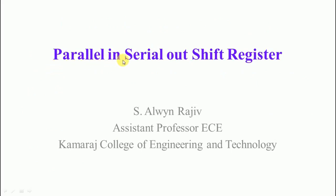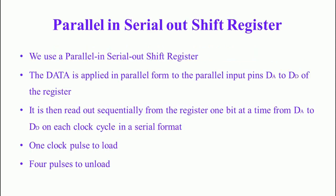In this lecture we are going to see about the parallel in serial out shift register. In a parallel in serial out shift register, the data is applied in a parallel form to the parallel input pins DA to DD. We are using four flip-flops: the first flip-flop is called the A flip-flop and the fourth flip-flop is called the D flip-flop. All inputs can be loaded into these four flip-flops via their respective inputs DA to DD, and then read out sequentially one bit at a time from DA to DD on each clock cycle in a serial format.